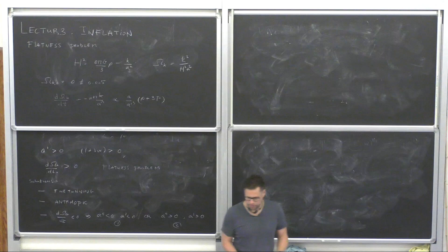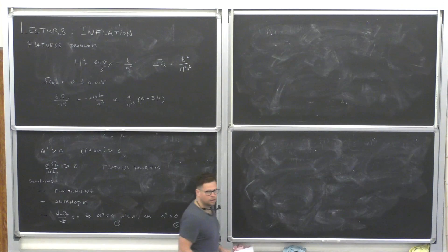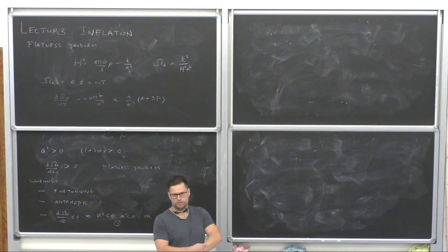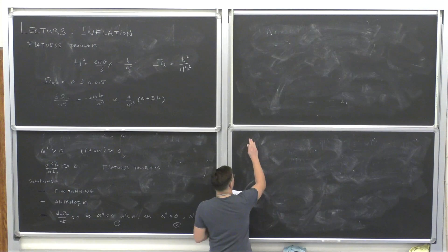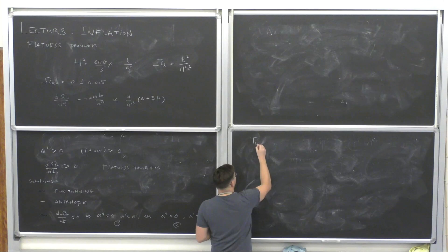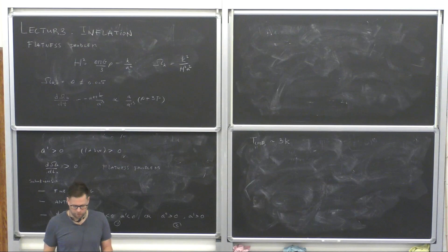Now the second problem — the horizon problem. The CMB is uniform: it has anisotropies, but by and large the average temperature is almost constant, roughly 3 Kelvin, in each and every direction, with fluctuations of order 10⁻⁵.